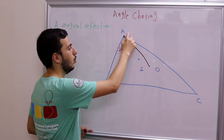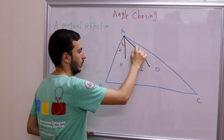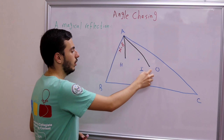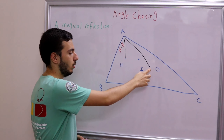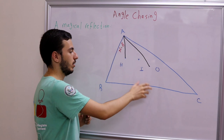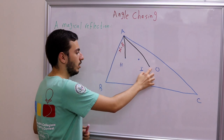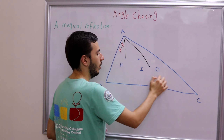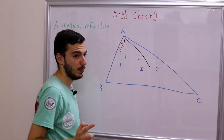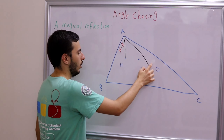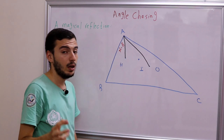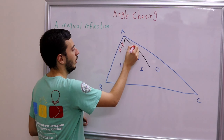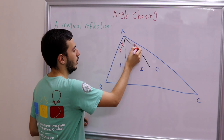What about angle OAC? O is the circumcenter, so it's the center of the circumcircle. That means OA = OC, so triangle OAC is isosceles. But angle AOC = 2B, so the two base angles are each (180° − 2B)/2 = 90° − B. So angle OAC is also 90° − B.